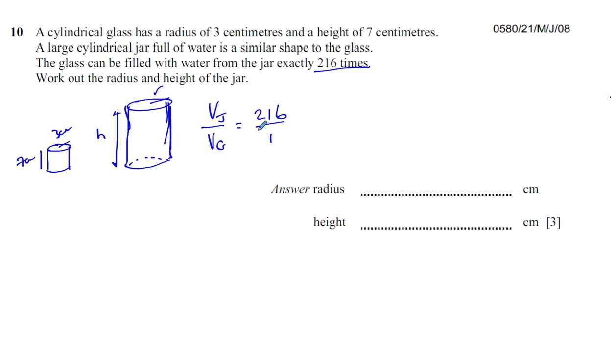You want to find the radius and the height of the jar. So you can say the radius of the jar is equal to, it's going to have something to do with the radius of the glass, but it's bigger than the radius of the glass. The radius of the glass is 3 centimeters.